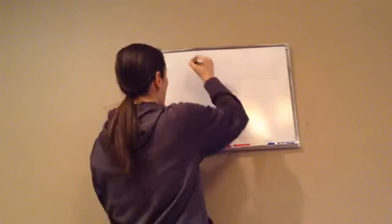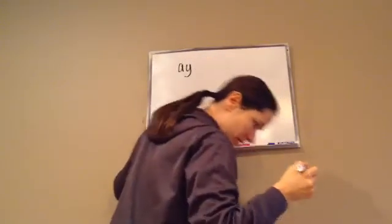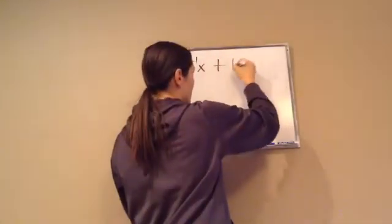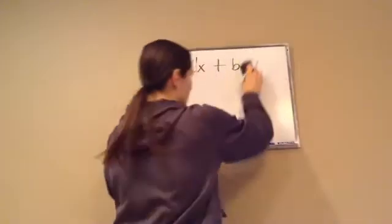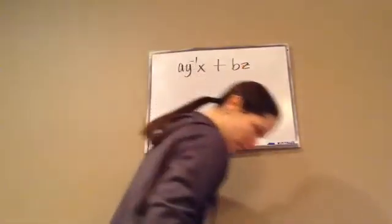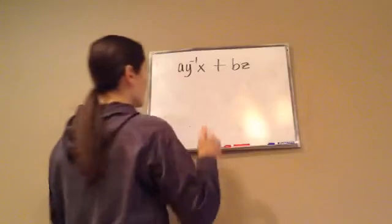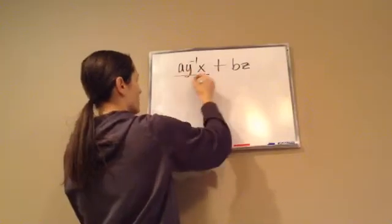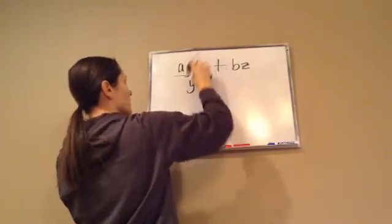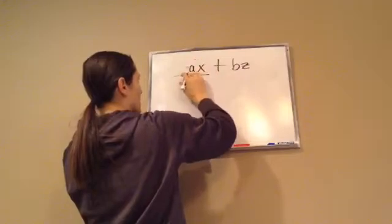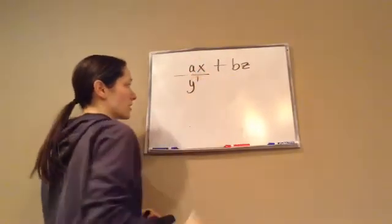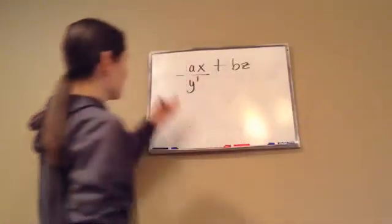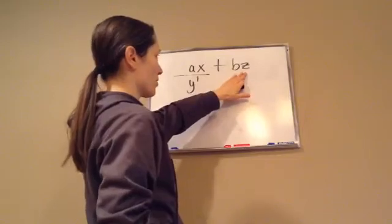All right, here's another one. ay to the negative 1 x plus bz. I'm going to put a line through that to make sure we know it's a z. Okay, now all we have to really move is this y to the negative 1. So I'm going to go and do that. It's going to become y to the 1. And this just becomes ax. Now, all of our exponents are positive at this point. All right, now, what do I do here? This one doesn't have a denominator.